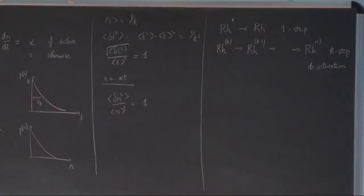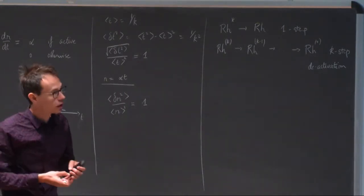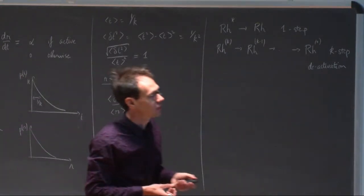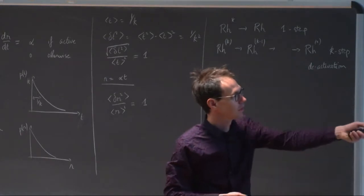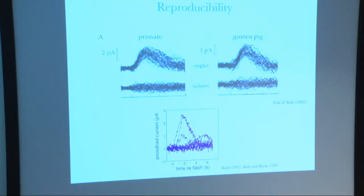So instead of having one step, you have k steps. So how does that help you with the reproducibility? That's the experimental reproducibility you see in response to a single photon — this is the output current coming from the photoreceptors. You can see it's much less than 100% fluctuations; in fact, it's of the order of 25%.